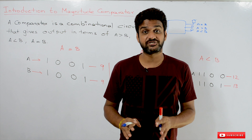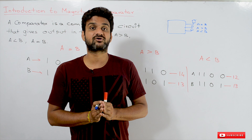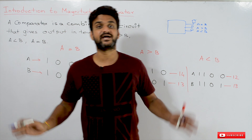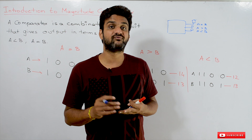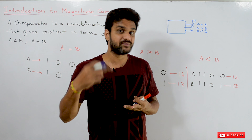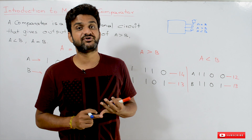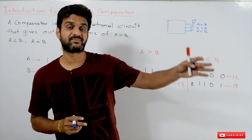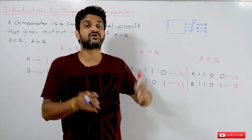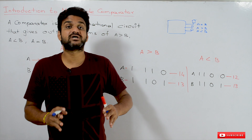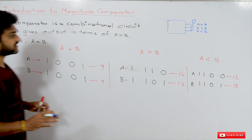The combinational circuit for the comparator is complex to understand, so we have divided this into three videos. In our next video we are going to cover the one-bit comparator, then a two-bit comparator, and the third video will cover the four-bit comparator. By understanding all those videos you can get a clear idea of how the circuit for the magnitude comparator can be made of any bit size.